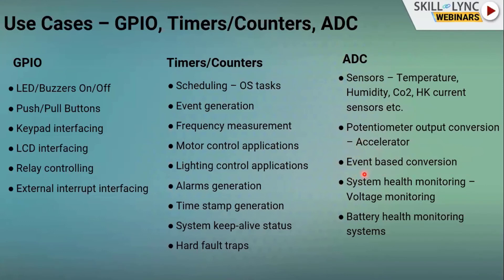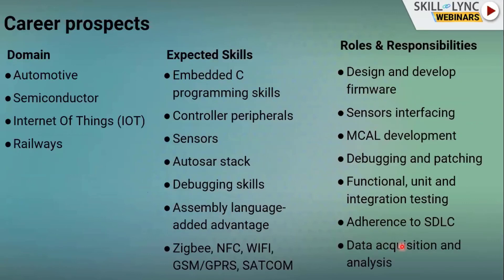ADC is also used for event-based conversion, system health monitoring such as VCC power supply voltage monitoring, and battery health monitoring. In industries like railways or thermal power plants that require 24/7 power, battery banks are used. Monitoring the DC output voltage of those battery banks with the ADC reveals their health status.